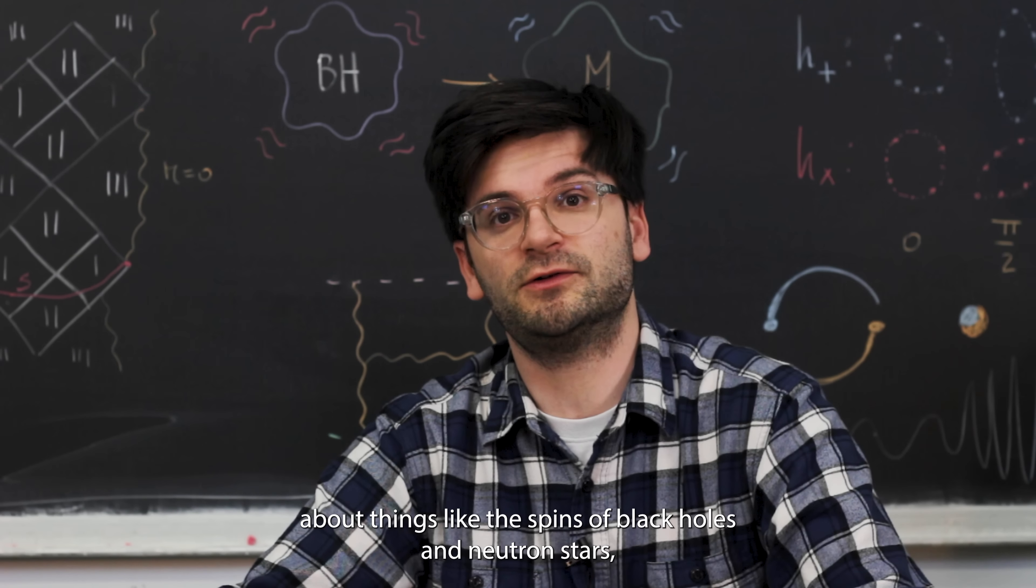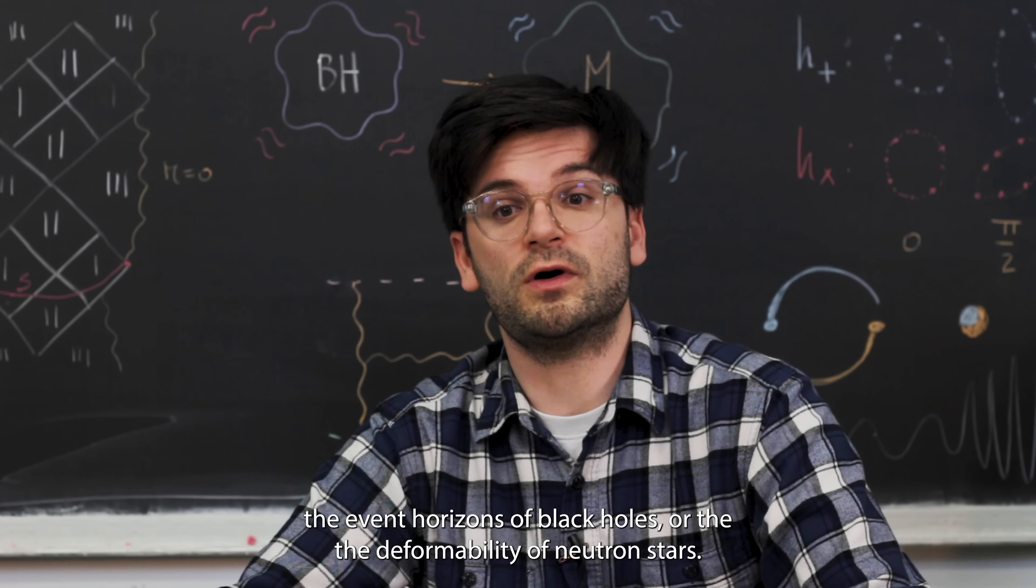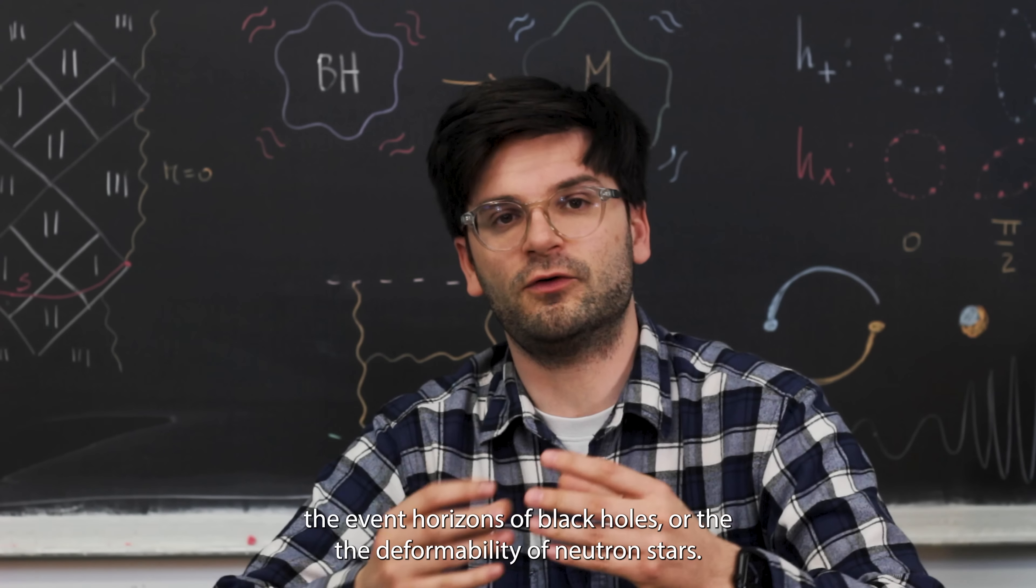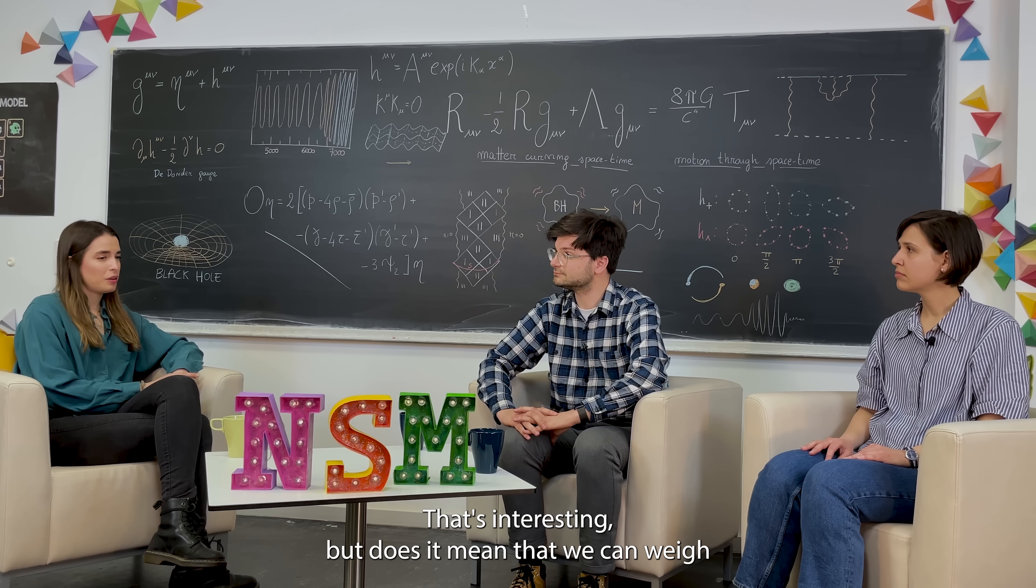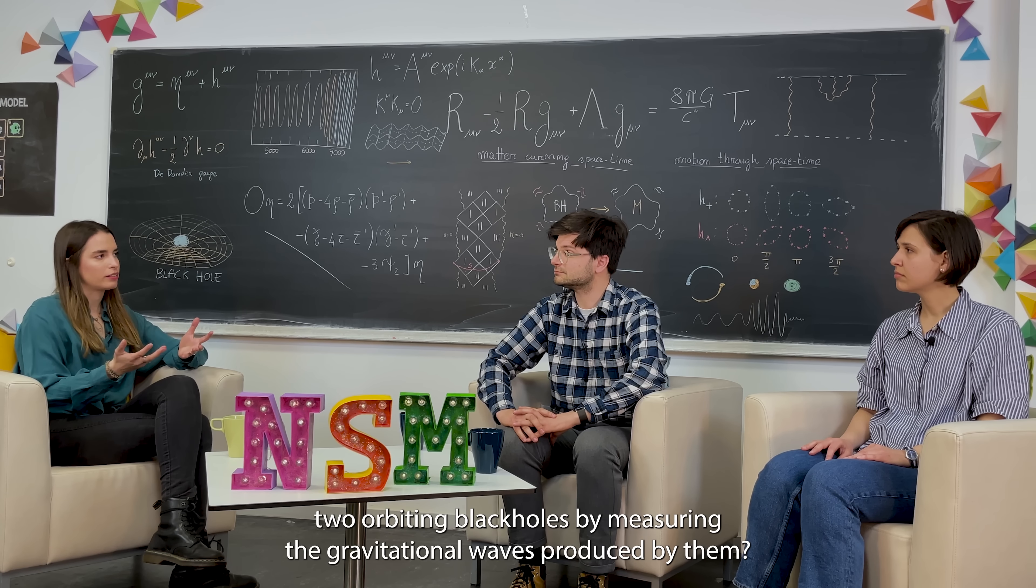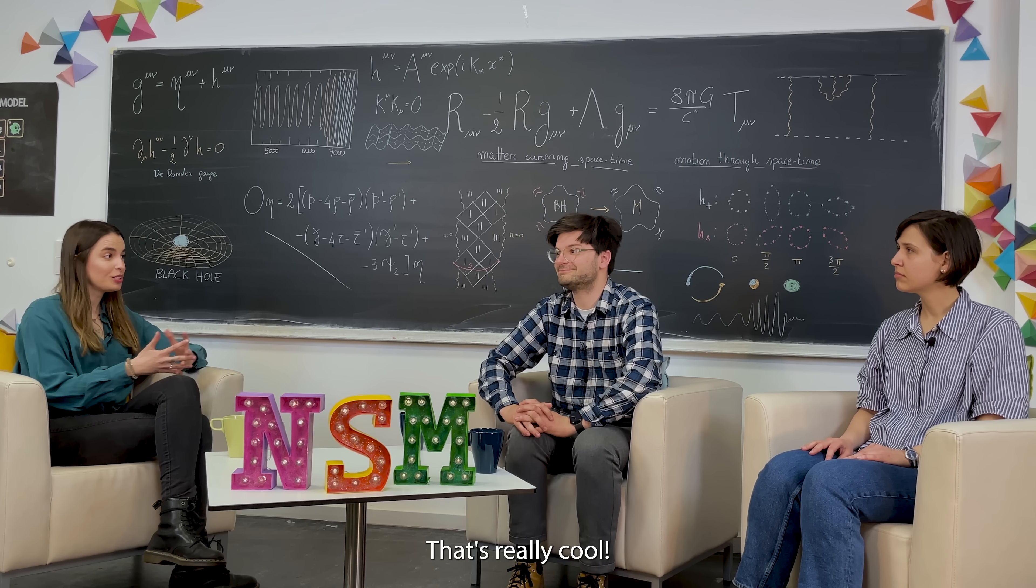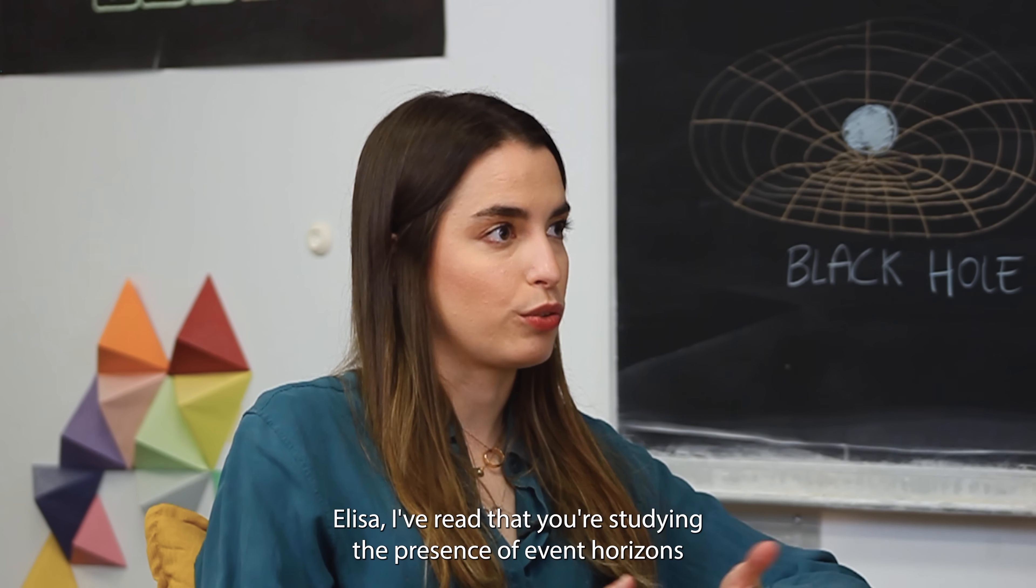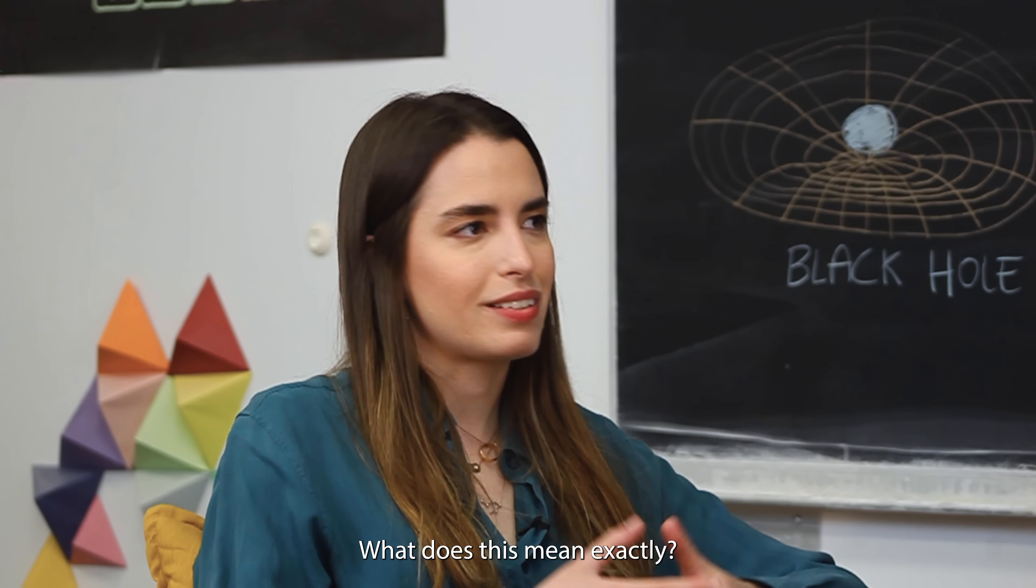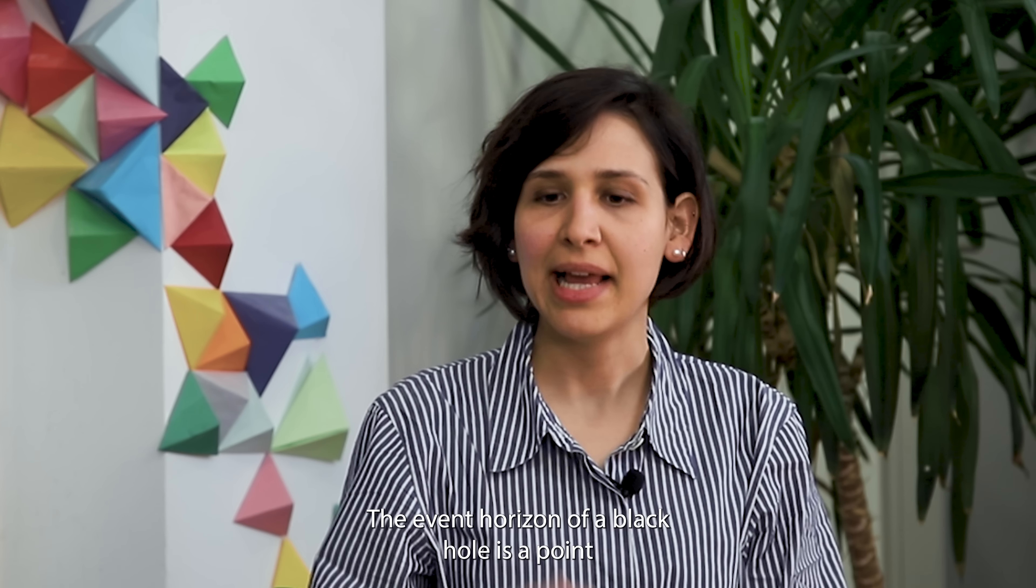In the future, though, we hope to be able to make more nuanced observations about things like the spins of black holes and neutron stars, the event horizons of black holes, or the deformability of neutron stars. That's interesting. But does it mean that we can weigh orbiting black holes by measuring the gravitational waves produced by them? Absolutely. And we already are. That's really cool. Elisa, I've read that you're studying the presence of event horizon through gravitational waves. What does this mean exactly?